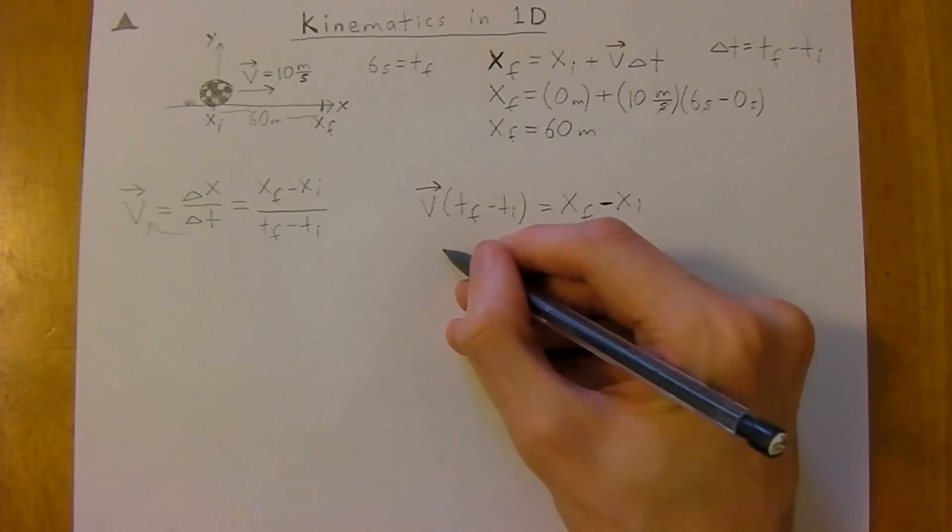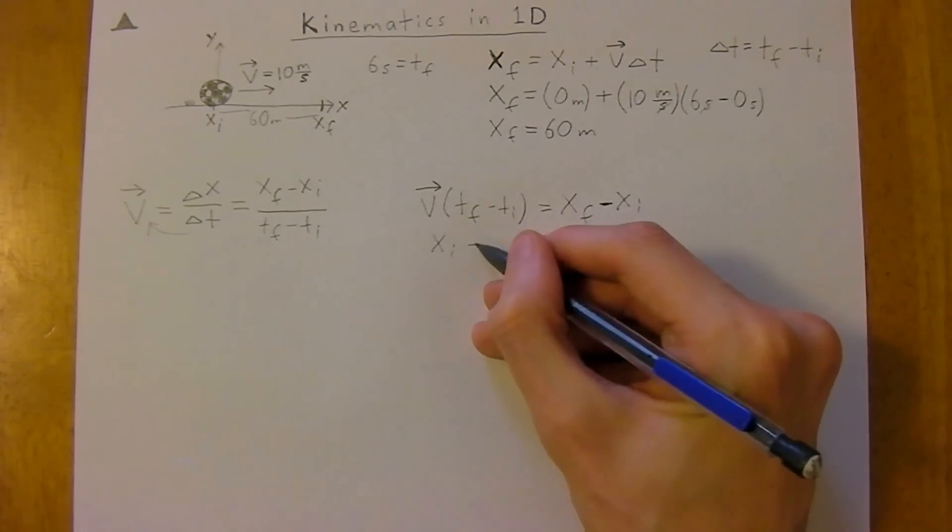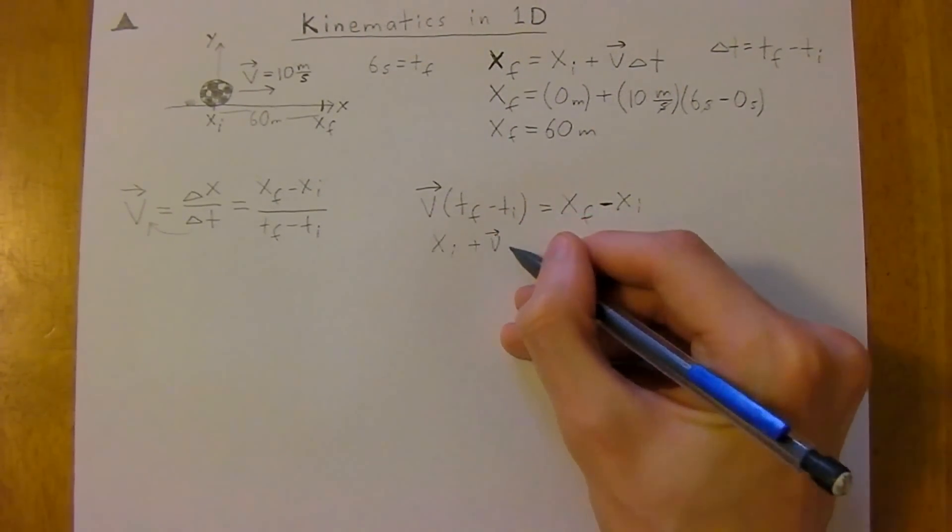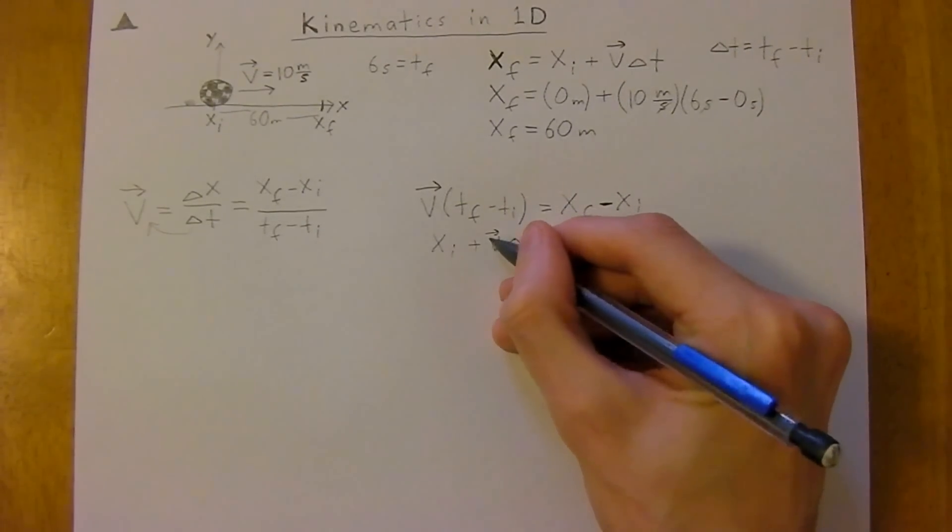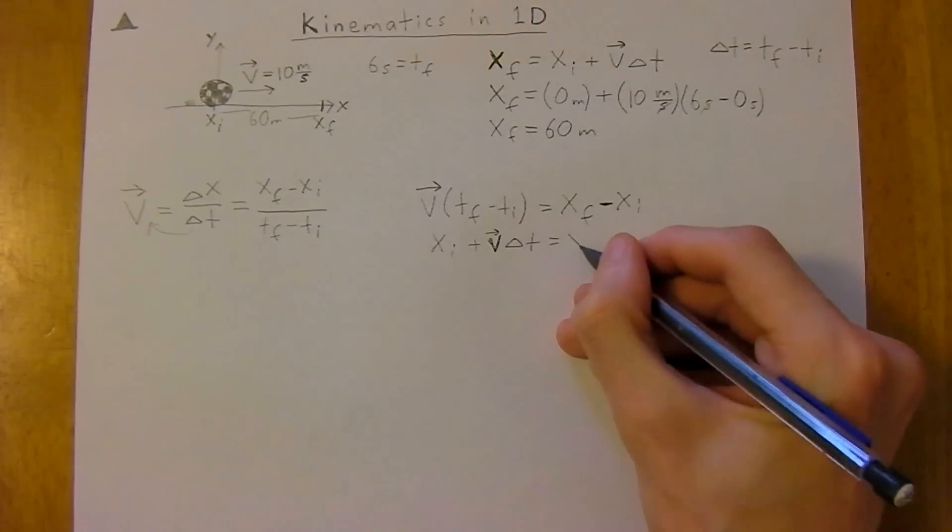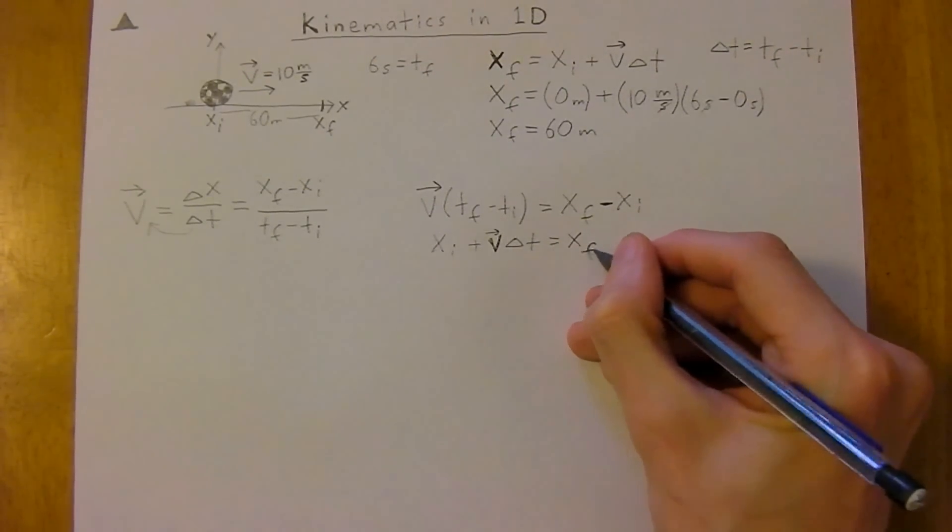And now all we have to do is add your x-initial to both sides to get this equation. So our x-initial, and we can just represent that as our change in time. So that is how you would derive it.